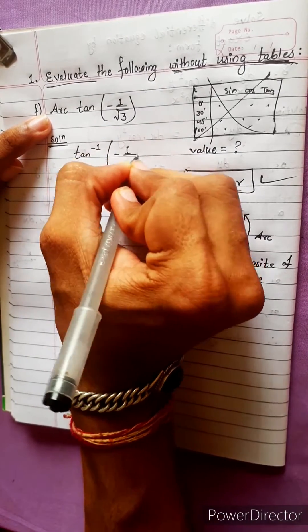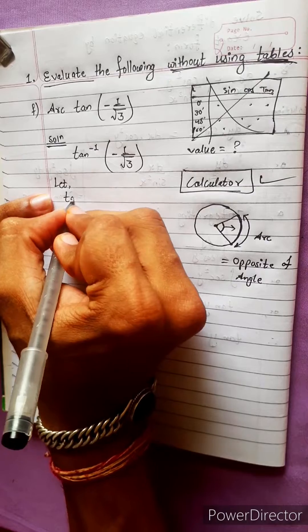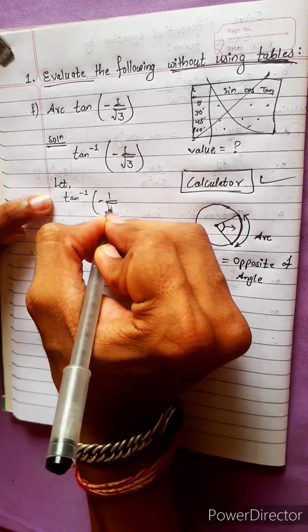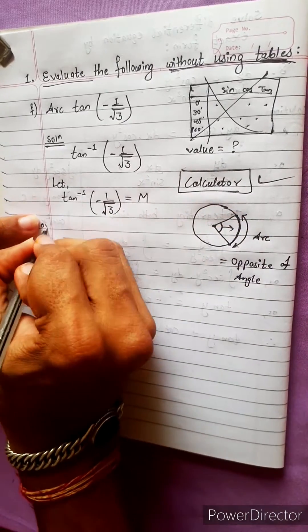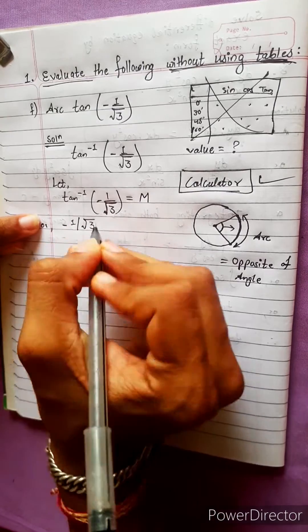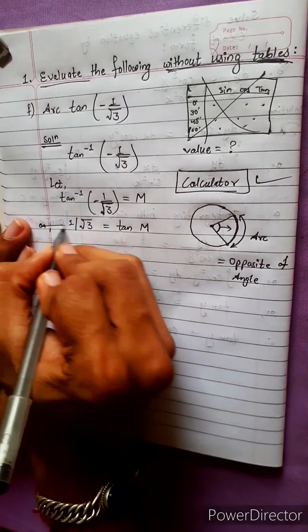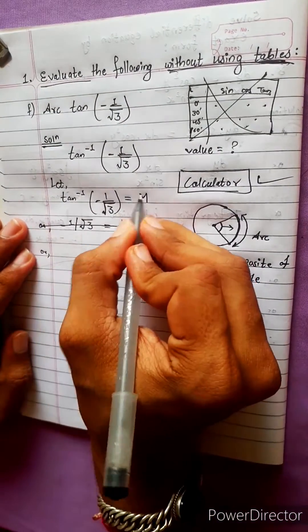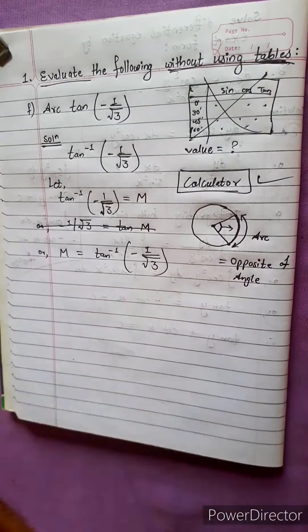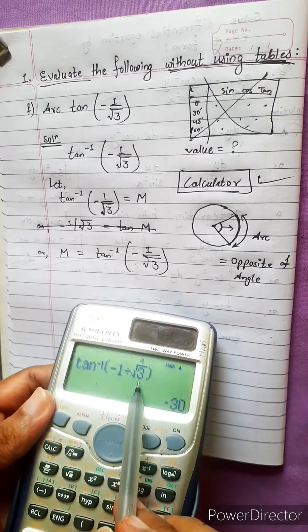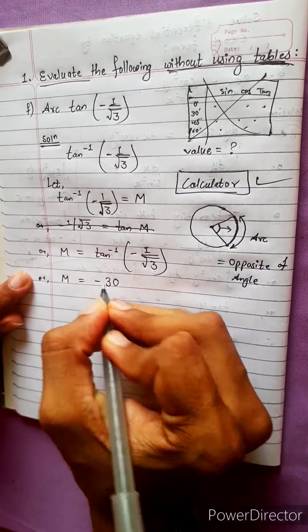Suppose tan inverse of minus one by under root three equals to some variable m. We need to find the function. Minus one by under root three equals tan m, so tan m equals minus one by under root three. Therefore, tan inverse of minus 1 divided by under root 3 equals minus 30 degrees, or m equals minus 30 degrees.